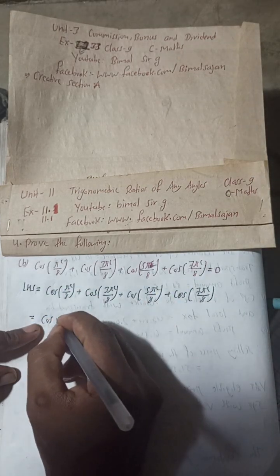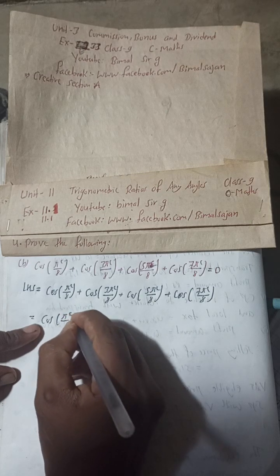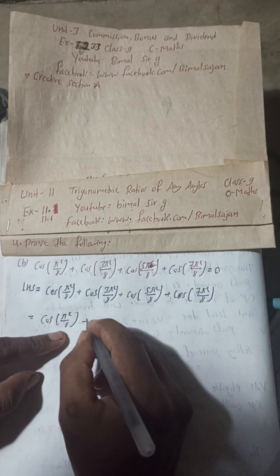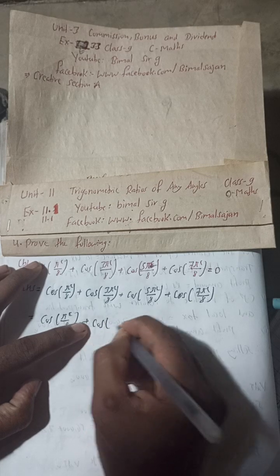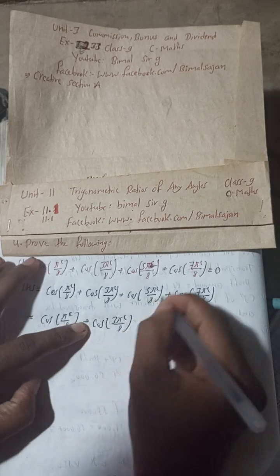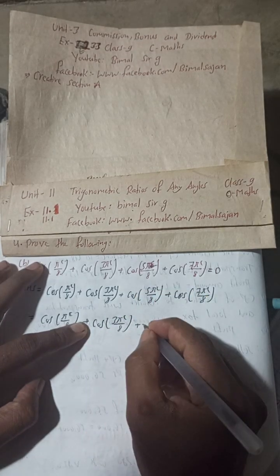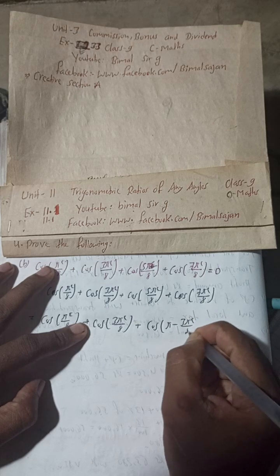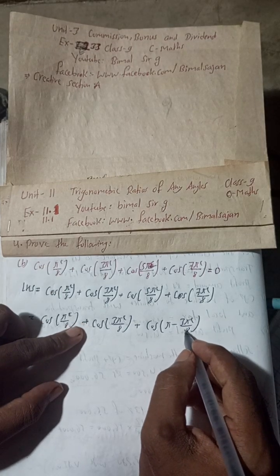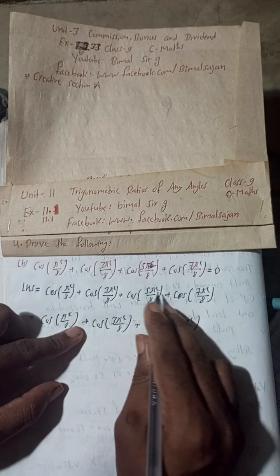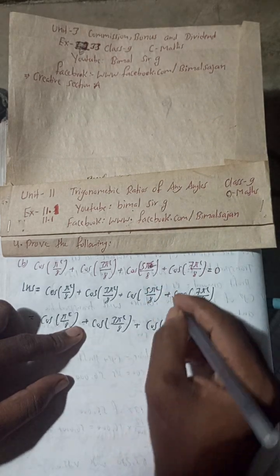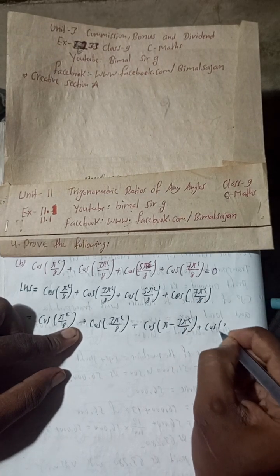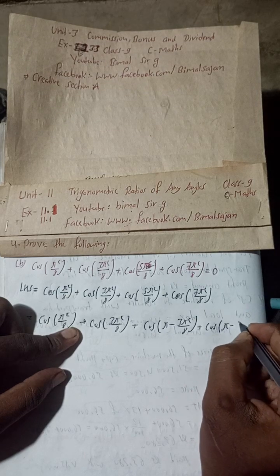This is cos π/8 and this is plus cos 3π/8. Now change cos 5π/8 to cos(π − 3π/8), because if you take LCM 8, then 8π − 3π will give 5π/8. So these are equal to each other.